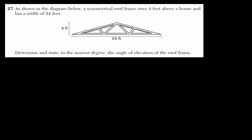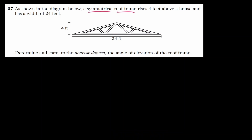In question 27, we are given a symmetrical roof frame with a height of four feet and a width of 24 feet. We would like to know, to the nearest degree, what is the angle of elevation for the roof frame. If we consider the angle on the bottom left-hand side, this is how much we need to open up to create this roof — this is what we define as our angle of elevation.